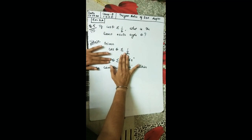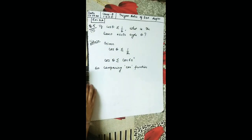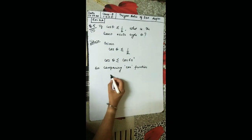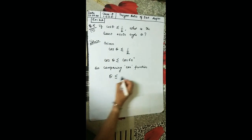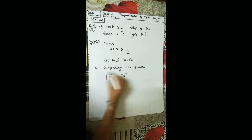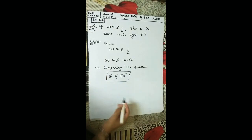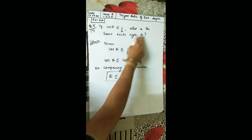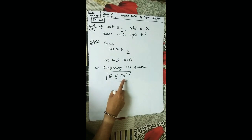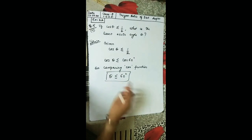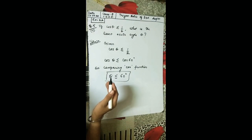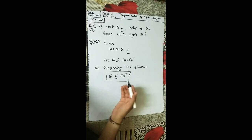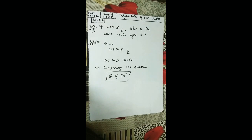On comparing the cos function, we get θ ≤ 60°. The question asks for the least acute angle θ. Since θ ≤ 60° and 60° is an acute angle, θ = 60° is the least acute angle.